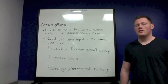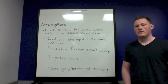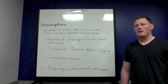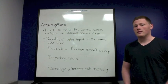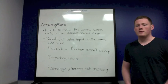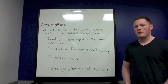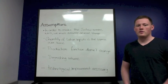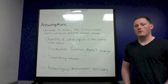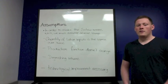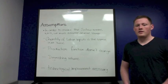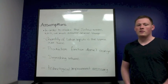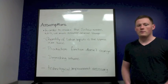Next we'll move on to assumptions. In order to make the Solow growth model work we have to assume several things. One, we have to assume that the quantity of labor inputs is the same over time, meaning there will be no increase or decrease in labor input. Also, we have to assume that the production function will not change. Third, we have to assume that there are always going to be diminishing returns to capital, and that each additional unit of capital input is going to yield fewer and fewer returns. Finally, we have to assume that the economy is always going to move towards the steady state, unless there are technological improvements — which is the only thing that will move the Solow model further.